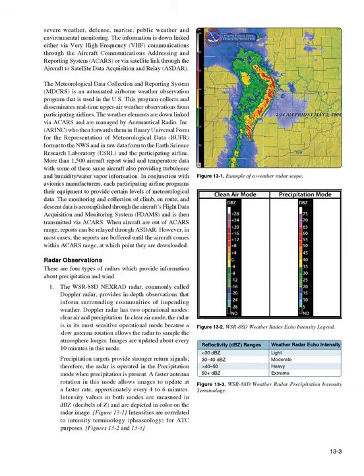In-Flight Weather Advisories. In-flight weather advisories, which are provided to en-route aircraft, are forecasts that detail potentially hazardous weather. These advisories are also available to pilots prior to departure for flight planning purposes. An in-flight weather advisory is issued in the form of either an AIRMET, SIGMET, or convective SIGMET. AIRMETs (WAs) are issued every six hours with intermediate updates as needed. An AIRMET includes forecast of moderate icing, moderate turbulence, sustained surface winds of 30 knots or greater, widespread ceilings less than 1,000 feet and/or visibilities less than 3 miles, and extensive mountain obscurement.